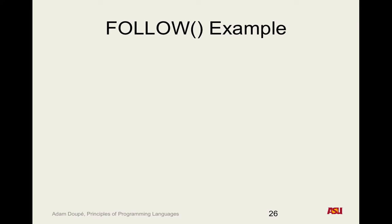Any questions on class stuff before we get started? So you keep iterating over first sets until no first set changes — that's how you know you're done. The plan for today is we're going to go over follow sets and go through an example. Then we're going to do a whole end-to-end example using a grammar with first sets, follow sets, and proving that there is a recursive descent parser for this grammar — and then actually writing that recursive descent parser.